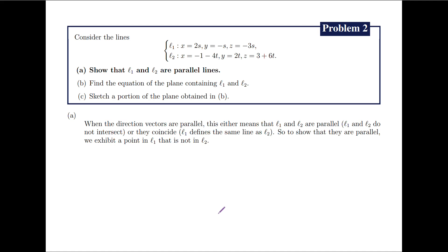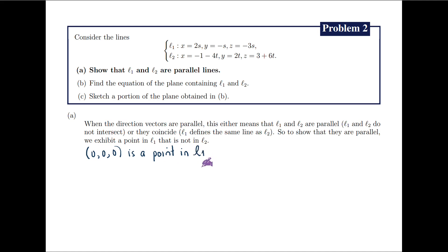To show that they are parallel, we exhibit a point in L1 that is not in L2. Observe that the point with coordinates 0, 0, and 0 satisfies the parametric equations of L1 by taking s equals 0. This tells us that (0, 0, 0) is a point in L1. Now we check if (0, 0, 0) is a point in L2 by solving the following system of equations.